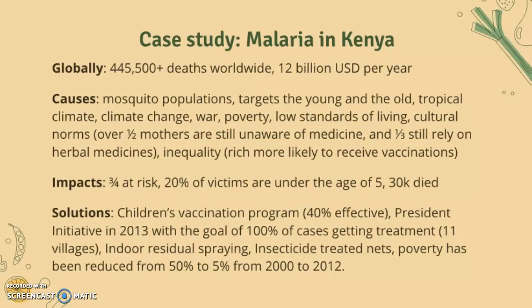Inequality means the rich are more likely to receive vaccinations. In terms of impacts, three-quarters of people are at risk, 20 percent of victims are under the age of five, and 30,000 people have died in Kenya. Solutions include a children's vaccination program which is 40 percent effective, and the President's Initiative in 2013 with the goal of 100 percent of cases getting treatment in 11 different villages.